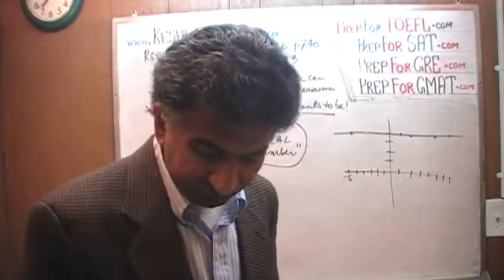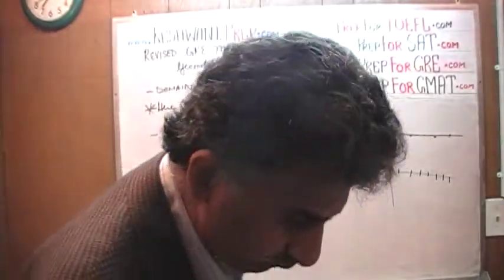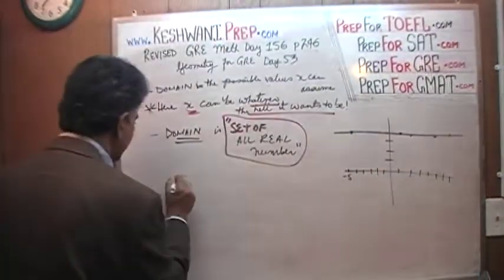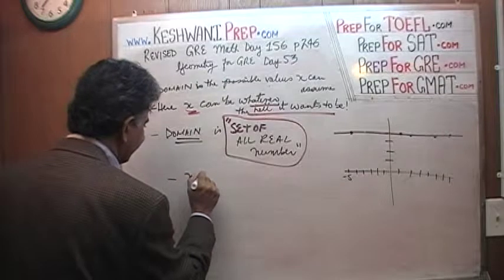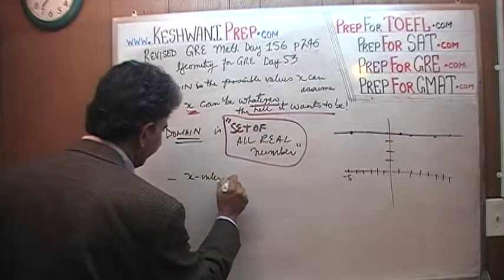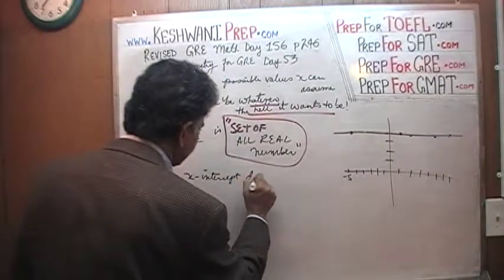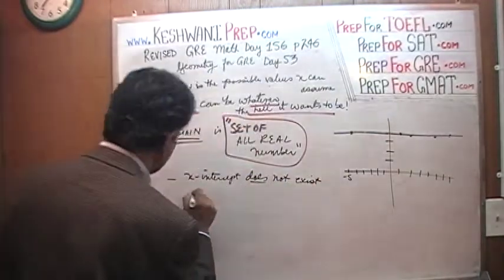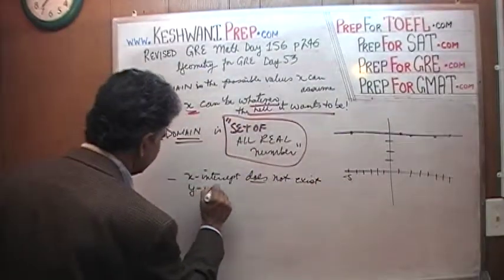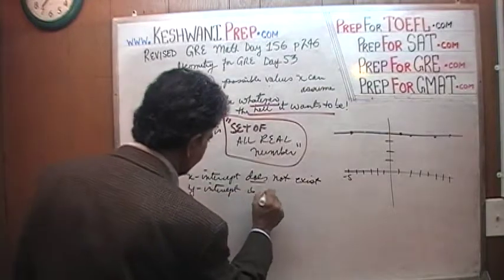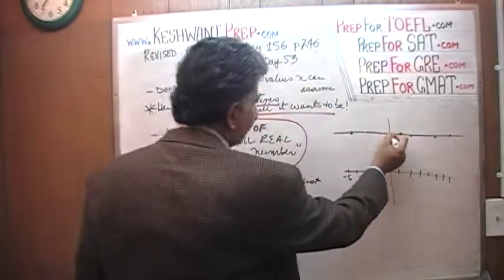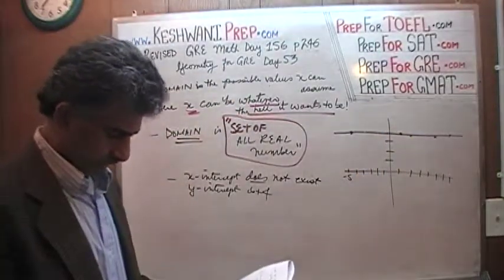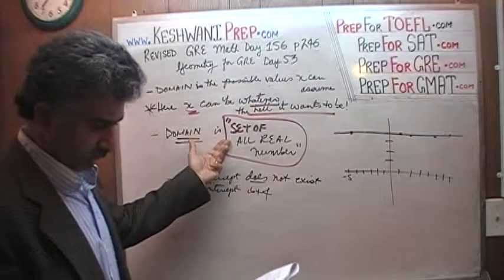We talked about the X-intercept, but I never talked about the Y-intercept. What is the Y-intercept of this graph? Of course it is very simple — the Y-intercept is 4. So: X-intercept does not exist, and the Y-intercept is 4. It cuts the Y-axis at 4. The domain is the set of all real numbers.